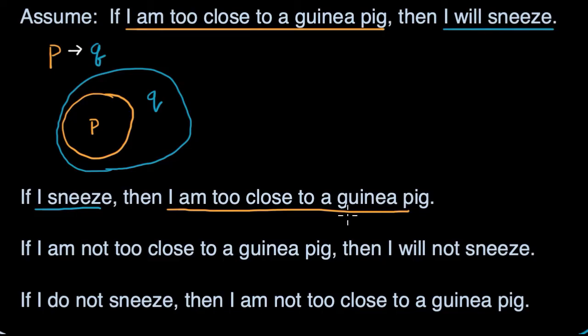But what if we wanted that to be true? What if we wanted the converse to be true? Well, that would be a situation where P implies Q and Q implies P. Q implies P.